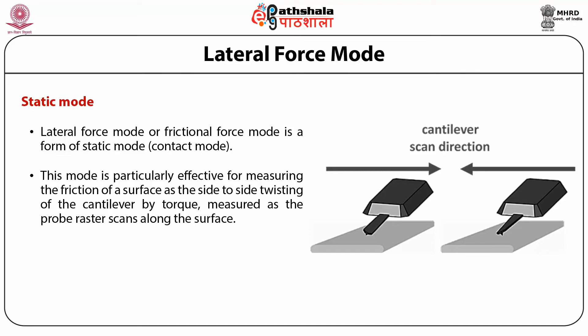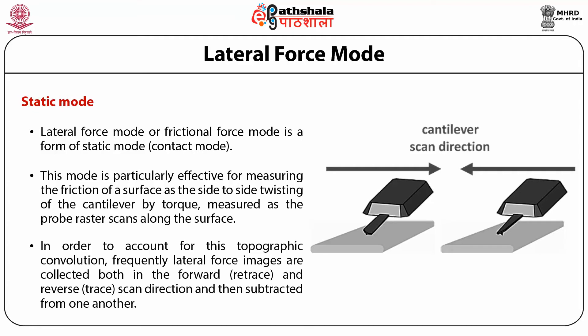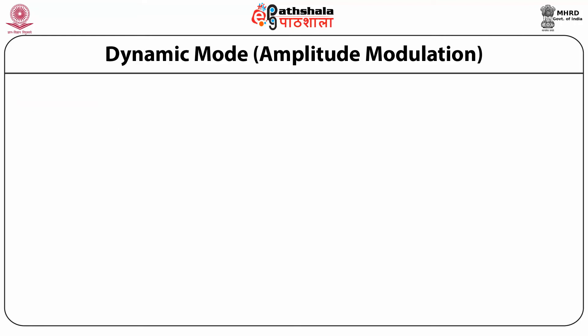When operating in lateral force mode, it is important to be aware of topography that can convolute the lateral force signal, because changes in topography will incur a torsion onto the cantilever as well. In order to account for this topographic convolution, lateral force images are frequently collected both in forward and reverse scan direction and then subtracted from one another.